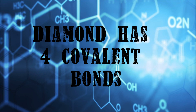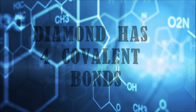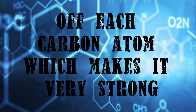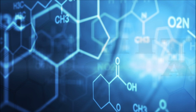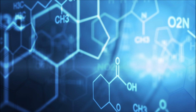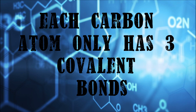Diamond has four covalent bonds on each carbon atom, which makes them very strong. Graphite seems so alike, but each carbon atom only has three covalent bonds.